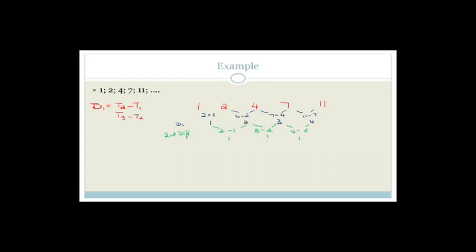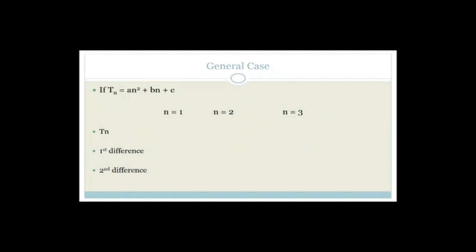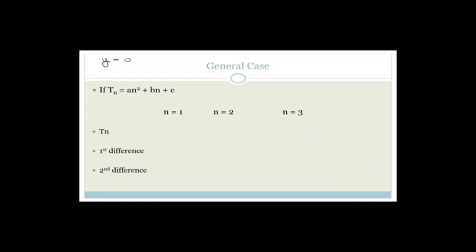Now we're going to prove this theoretically by going through a general case, and develop the formula used to solve quadratic sequences. The general term formula is Tn = An² + Bn + C, which should look familiar — it's the same form as the quadratic equation y = Ax² + Bx + C, with An² corresponding to Ax², Bn to Bx, and C to C.